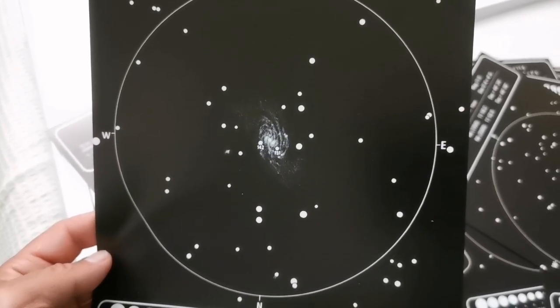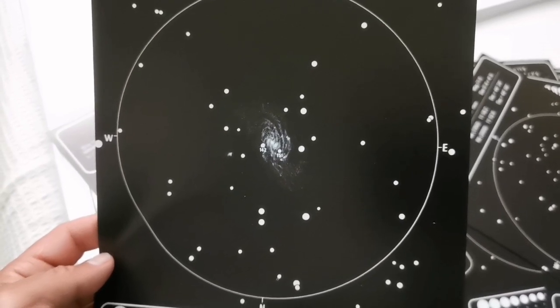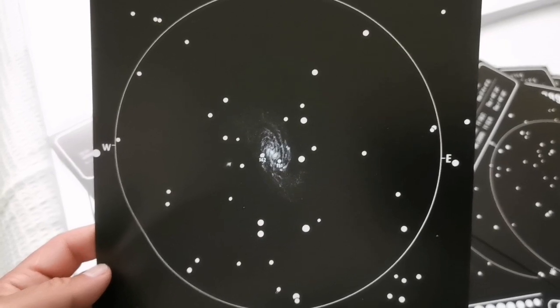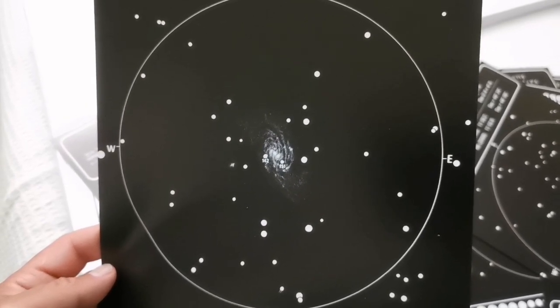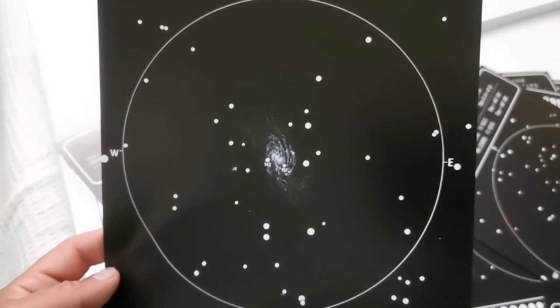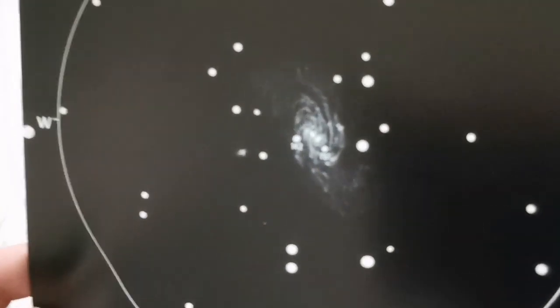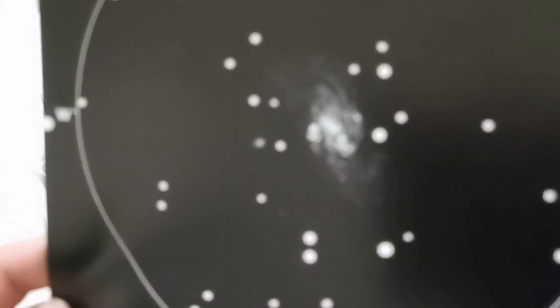Some are really faint, maybe magnitude 15 or something, but when you know this chart and these stars, which are foreground stars in our own galaxy, you will know that if there is any other star, they are supernovae.